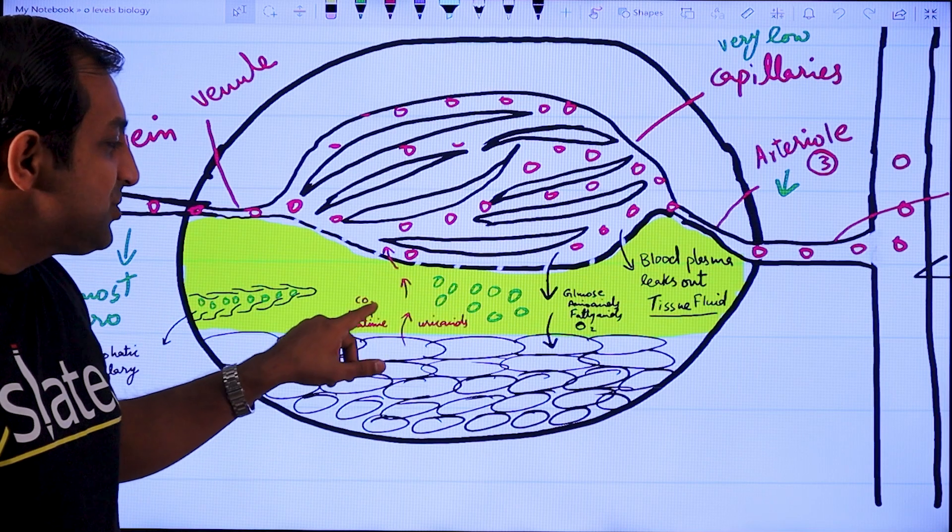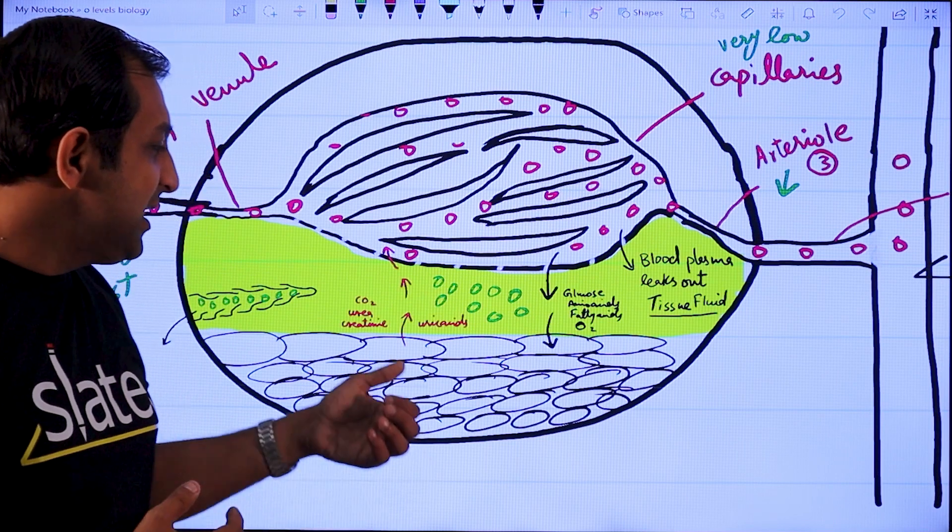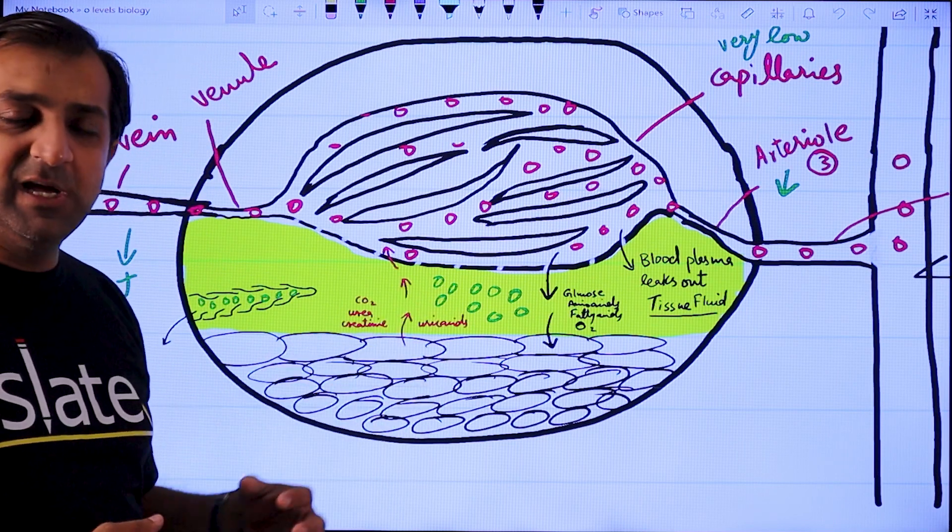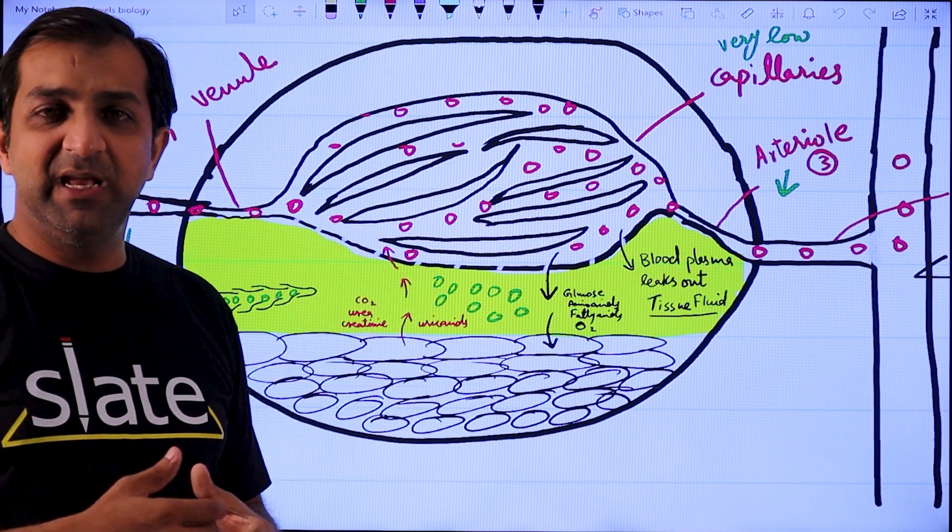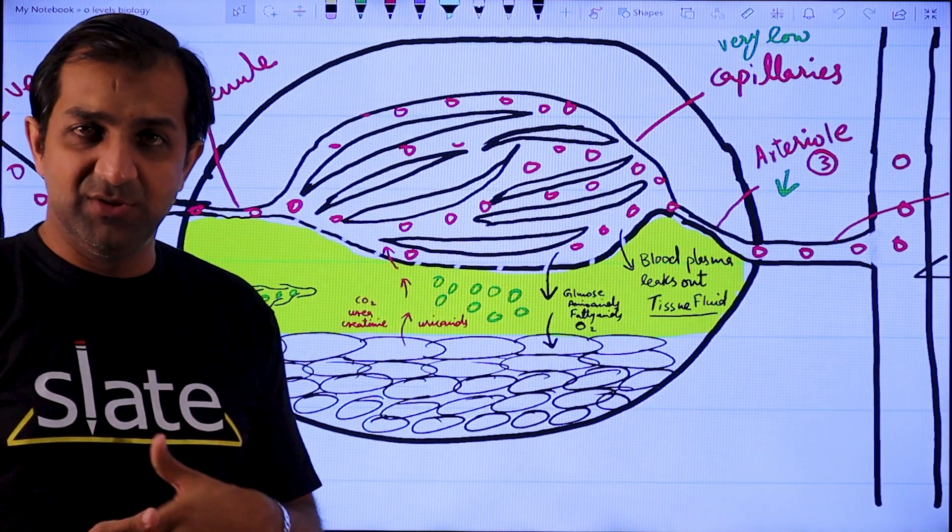Afterwards, this carbon dioxide is going to be carried away from your body via your lungs. And urea, creatinine and uric acids are filtered by the kidney and removed from the body as urine.